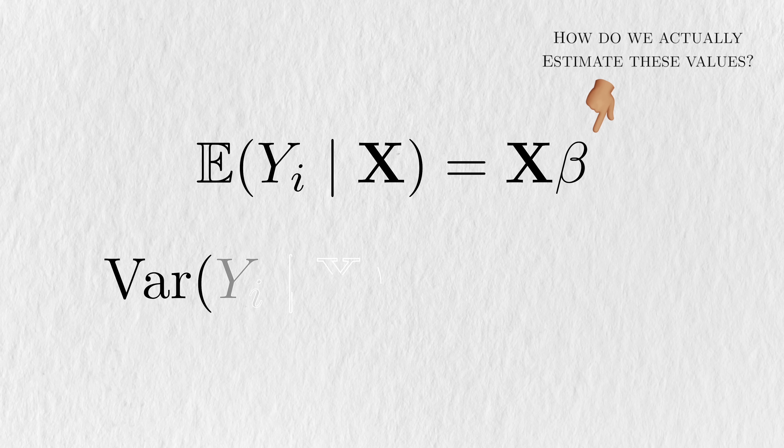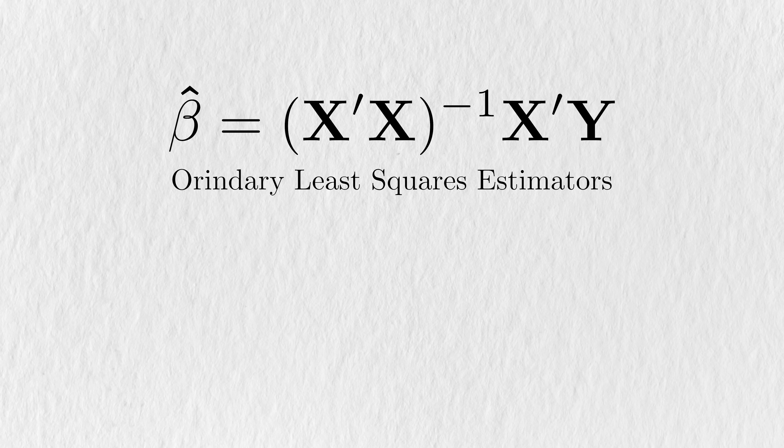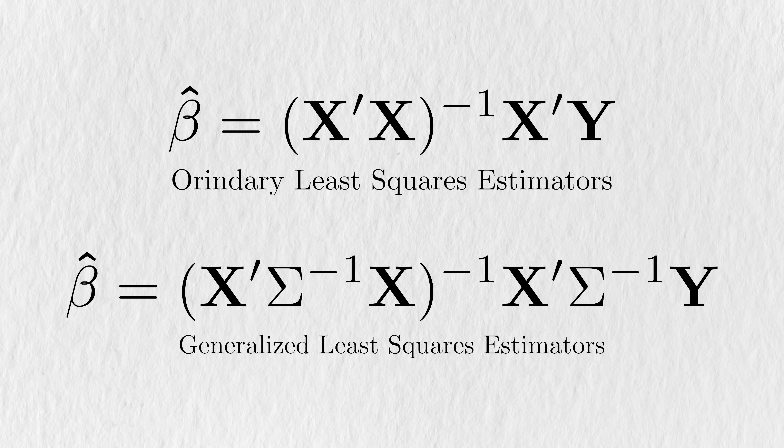That being said, how do we actually estimate the regression parameters under GLS? This expression represents the famous ordinary least squares estimators for the regression coefficients, but this expression represents the estimators for the GLS model. You can see the covariance of the outcomes slash errors incorporated into the estimators here and here. One way to interpret the GLS estimators is that it corrects the OLS estimators with this adjustment by the covariance matrix. While GLS gives us a way to correct for the correlation in the data, it brings us a new problem too. We need to know what this correlation matrix actually looks like. But as with many things in statistics, it's usually unknown to us, so we need to estimate them from the data.